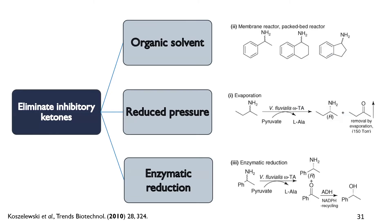The idea of a removal system is to get rid of the produced ketone from our system. One idea is to use an organic solvent to extract the ketone out of the reaction mixture using a biphasic system, thereby avoiding product inhibition. However, a big problem is that organic solvents are not really compatible with transaminases or enzymes in general. So there are ideas of membrane-backed reactors to avoid direct contact of organic solvents and the enzyme. Additionally, methods using reduced pressure can remove the ketone by evaporation, just by reducing the pressure.